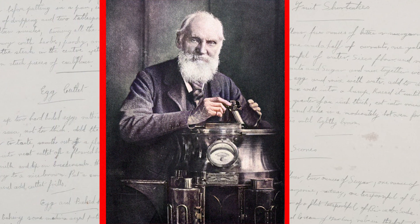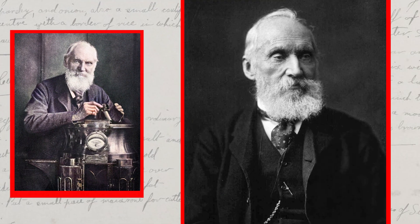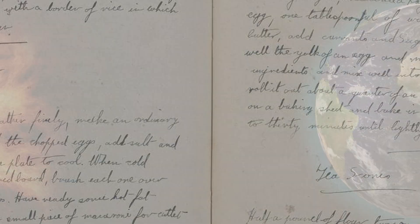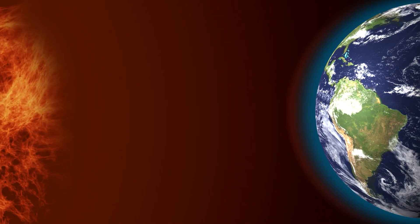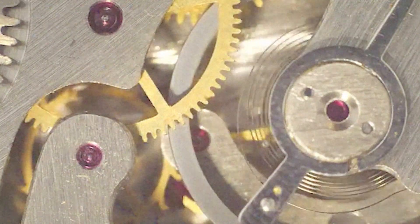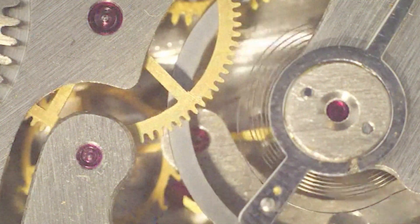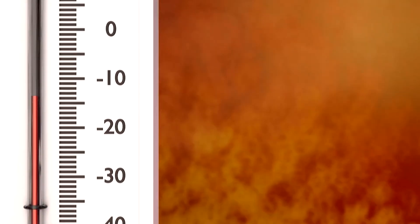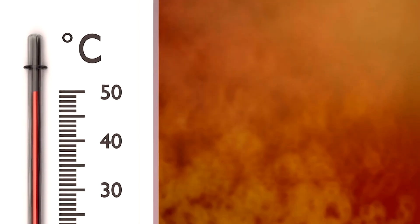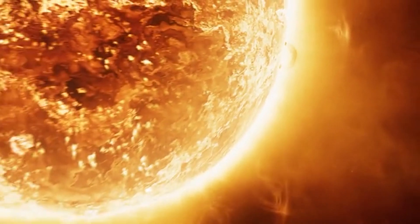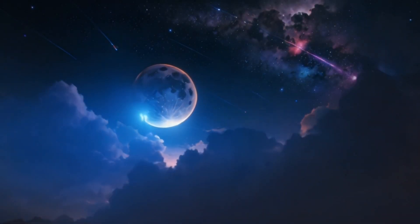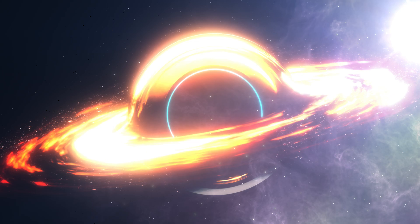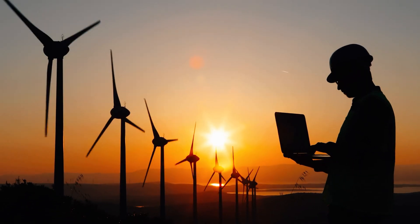The theory of universal heat death is based on the theories proposed by William Thompson, aka Lord Kelvin, who extended the theory of heat — represented by the first and second laws of thermodynamics — to encompass mechanical energy loss in nature in the 1850s. The concept originates from the second law, which states that entropy is likely to increase in an isolated system. If the universe exists long enough, it will eventually reach a stage where all energy has been evenly distributed.